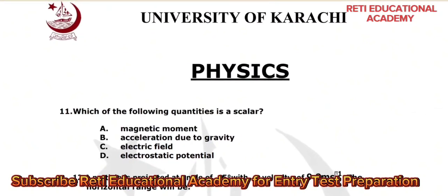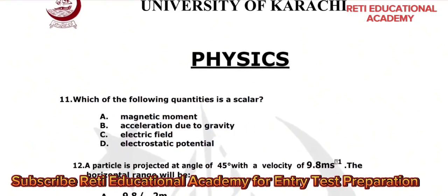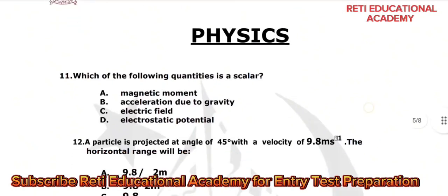Physics. Question number 11: which of the following quantities is a scalar? A) magnetic moment, B) acceleration due to gravity, C) electric field, D) electrostatic potential. The correct option is D, electrostatic potential.